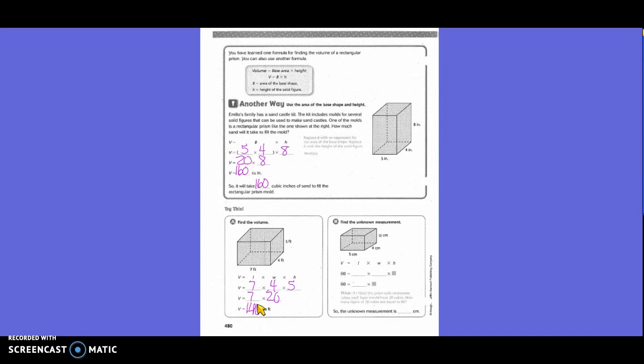Find the unknown measurement. They gave us the total volume. Now we need to figure out what the height is. They said volume equals length times width times height. And then they filled in the volume with 60. What's our length? 5. What's our width? 4. And we don't know what H is still, right? So what is 5 times 4? 20. And then we still don't know what H is. But now we have 60 equals 20 times H. So how do I get that H by itself? You do an inverse operation. We have multiplication, so we're going to divide. So 60 divided by 20 is 3. So the unknown measurement is 3 centimeters.